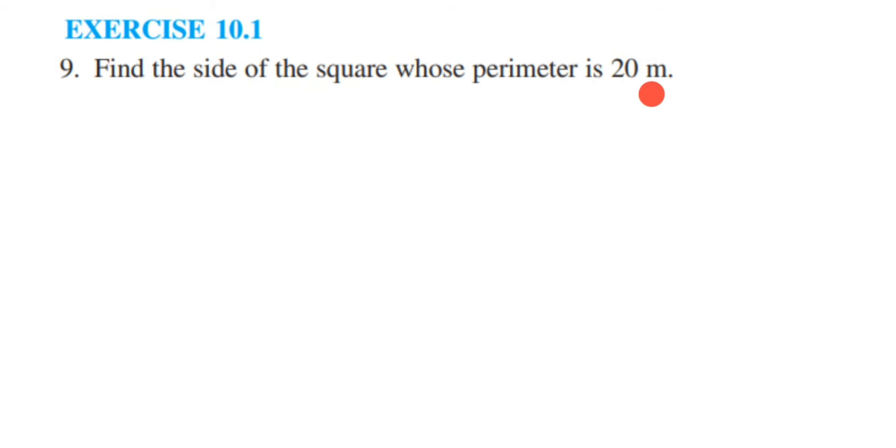So they have already given the perimeter and we have to find out the sides of the square. This is a square shape I have taken. They have given the perimeter, which means after adding all the sides, the perimeter is 20 meters.